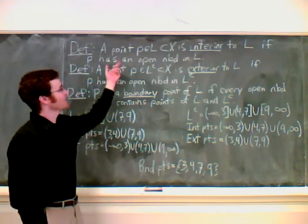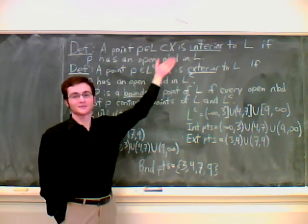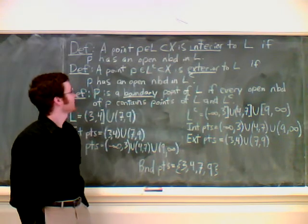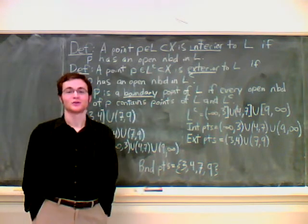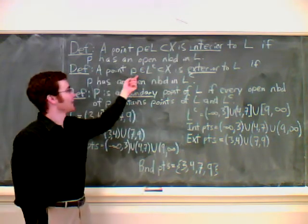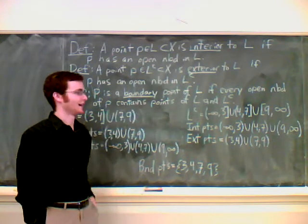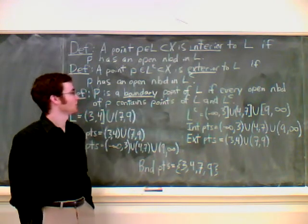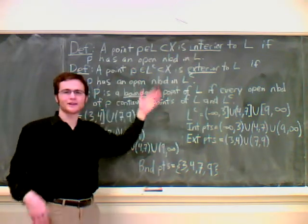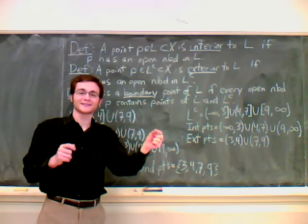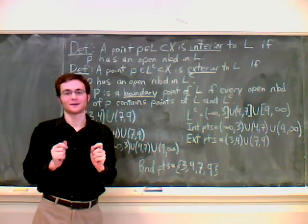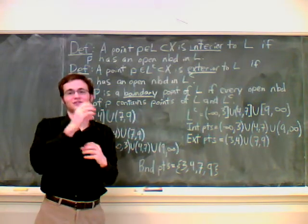First, a point P in a set L, which is a subset of our topological space X, is interior to L if P has an open neighborhood which is completely inside of L.